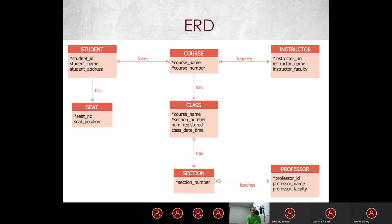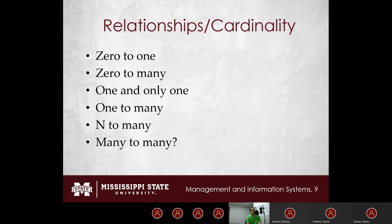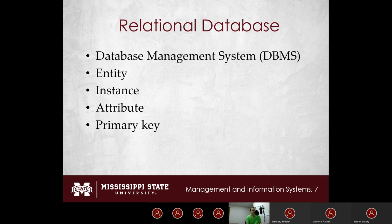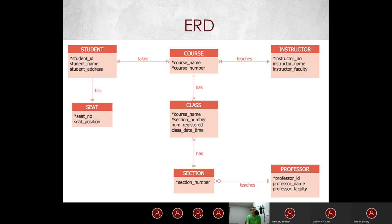Let's look at this ERD diagram. We have seat, student, course, class section, professor, and instructor. All of those are nouns — so those are entities. We have a student entity with information about the student. We have a seat entity, a class entity, an instructor entity, and so on. Below each entity we have attributes. For example, student ID, student name, and student address are all attributes that describe the student.